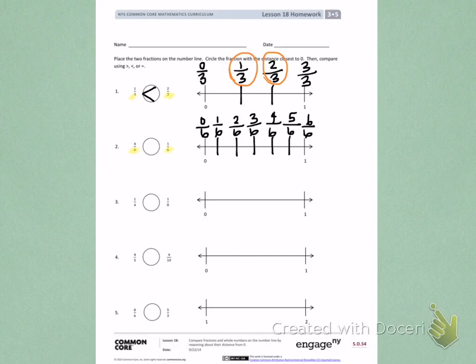This time, I am comparing 4 sixths and 1 sixth. One of those fractions is closer to 1. The fraction that I see that's closer to 1 is 4 sixths. So I'm going to mark 4 sixths is greater than 1 sixth because it is farther down the number line.